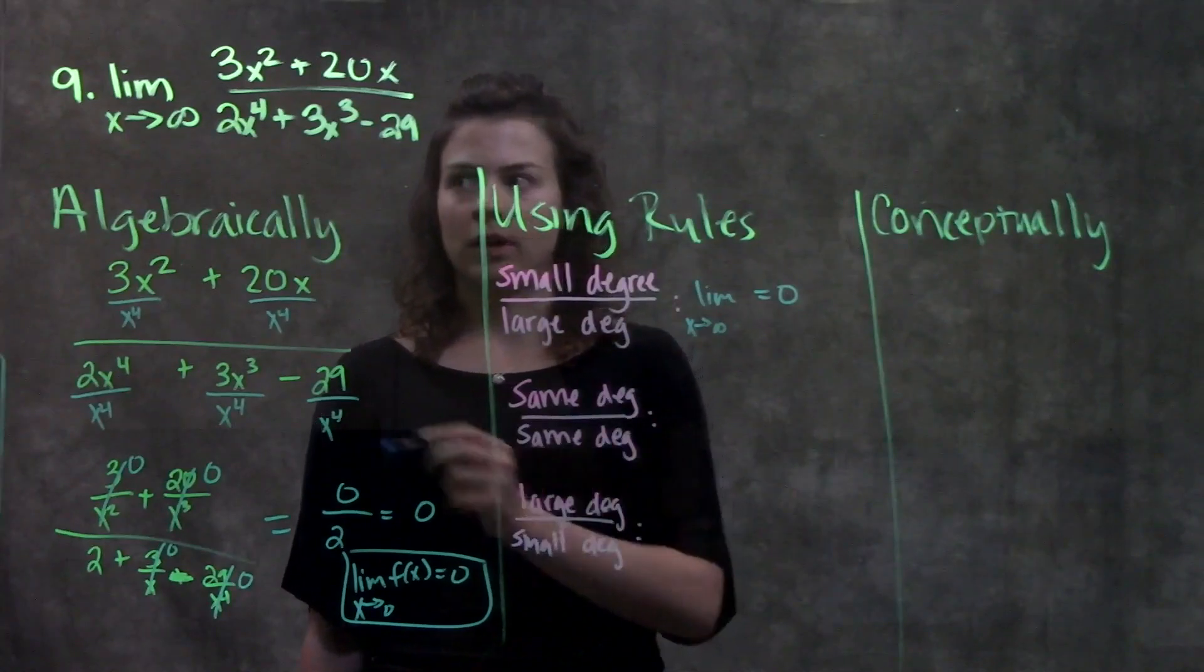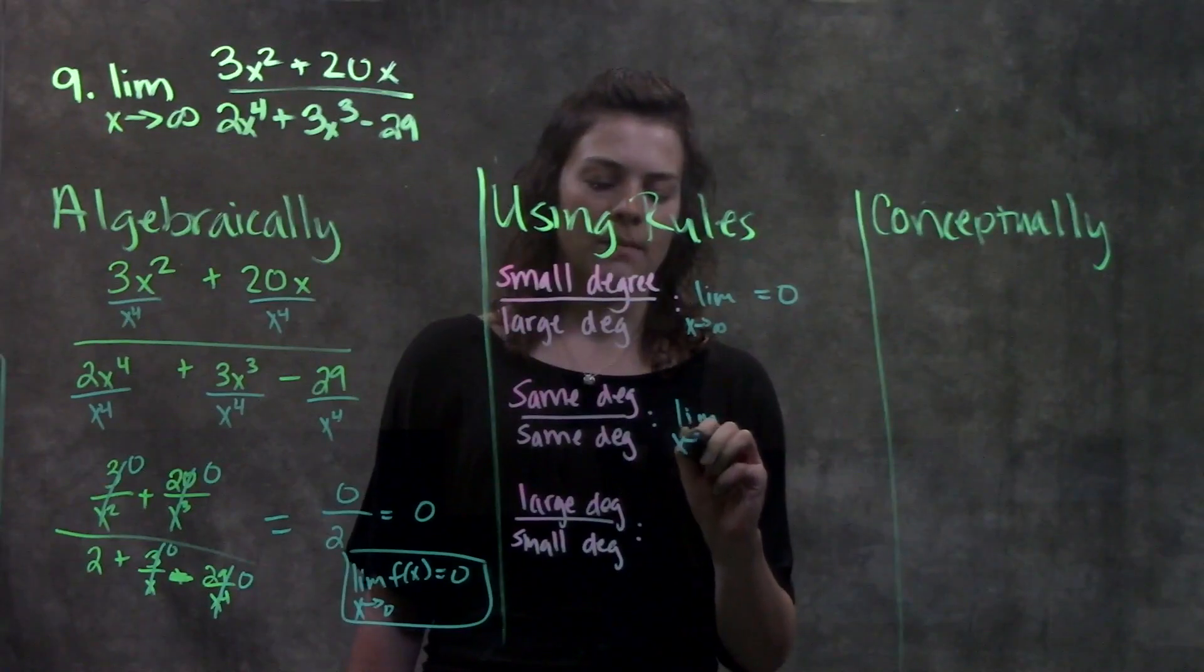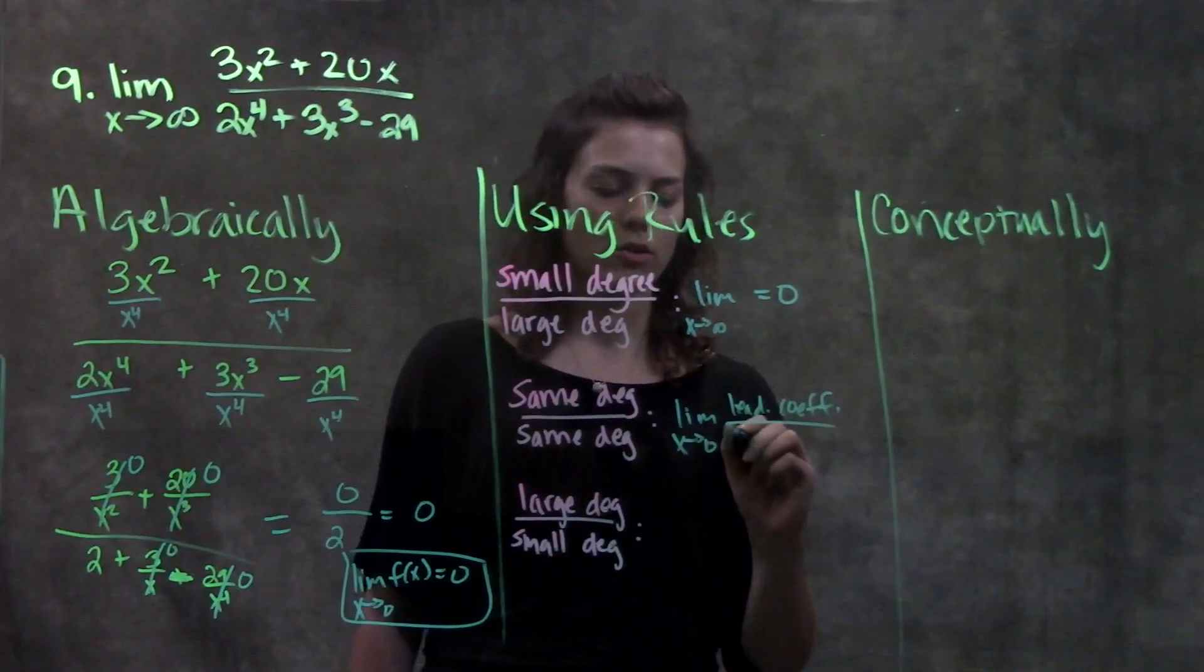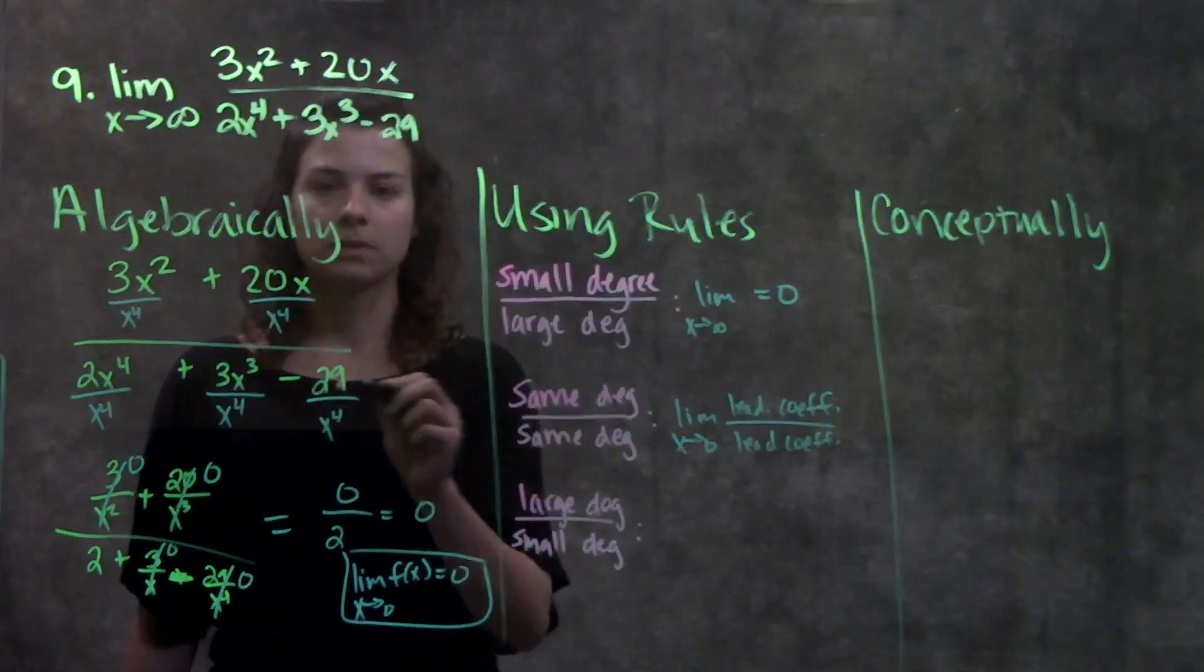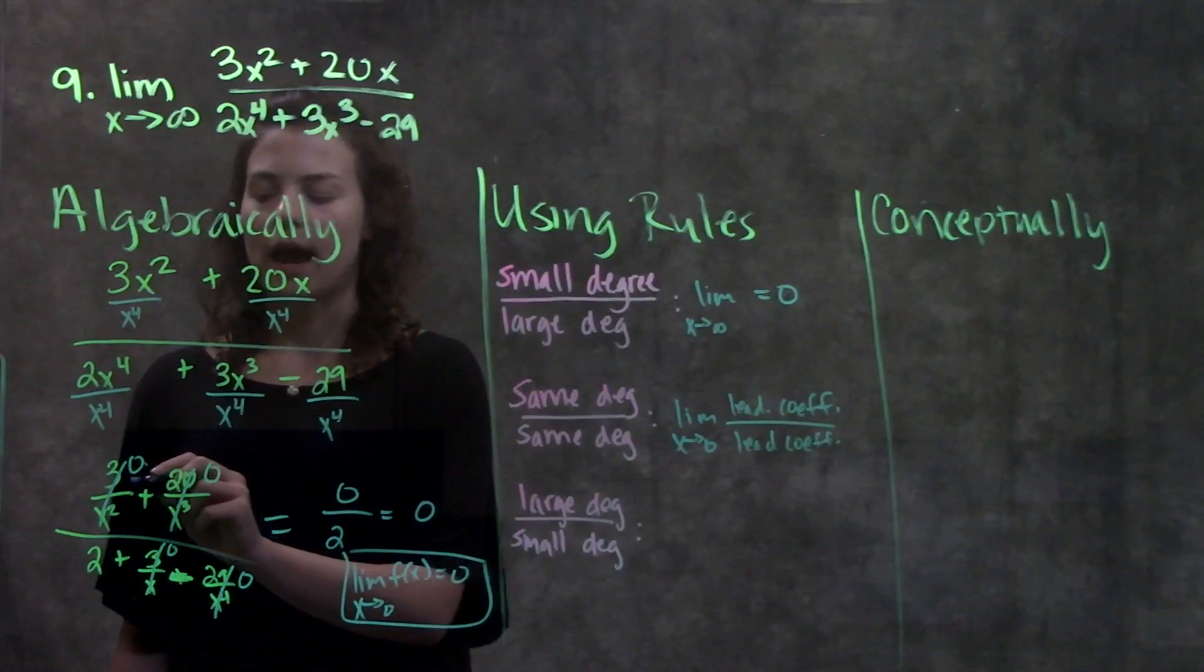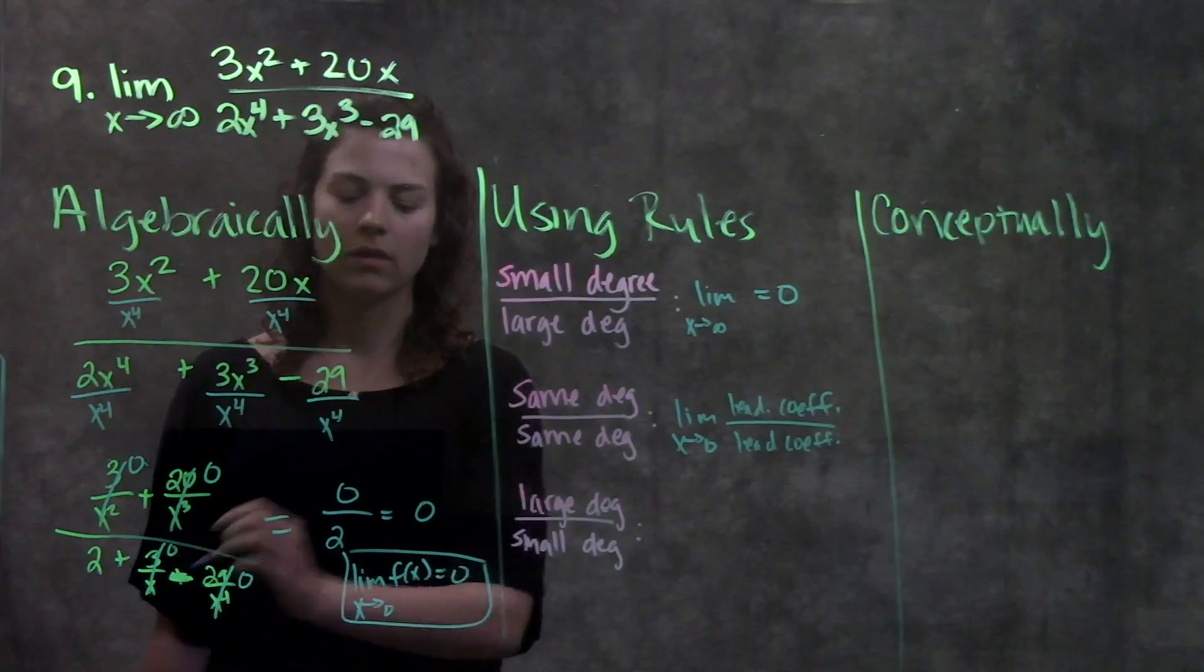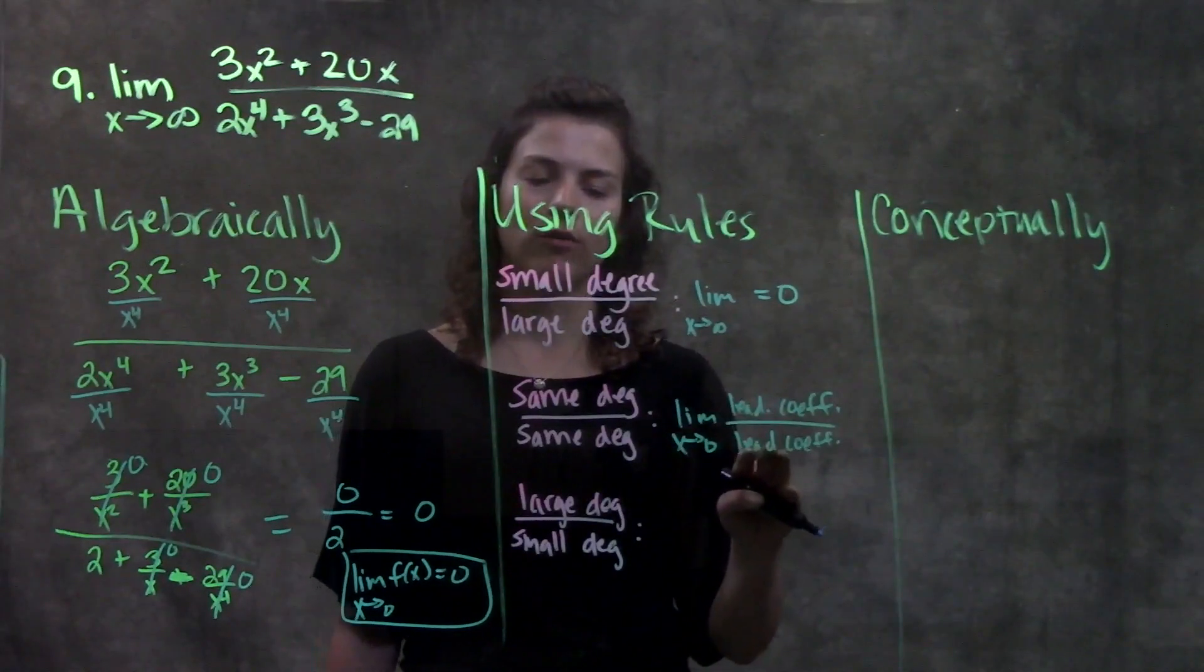If I have the same degree over the same degree, so let's say these are both x to the third or something, then my limit is equal to the leading coefficient here over the leading coefficient on the bottom. Because think about it, if you were to go through this process again, and if I were to have an x to the fourth up here, instead of having zero, I'd have whatever this term is, which is three. And so instead of having zero as my answer, I'd have three over my leading term here, which is two. I'd have the leading coefficient of the numerator over the leading coefficient of the denominator.